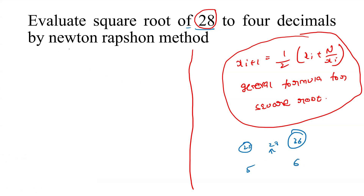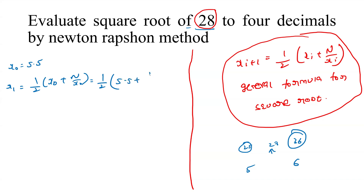I am taking the initial approximation x₀ = 5.5. For finding x₁: x₁ = (1/2) * (x₀ + n/x₀) = (1/2) * (5.5 + 28/5.5), which gives x₁ = 5.29545.